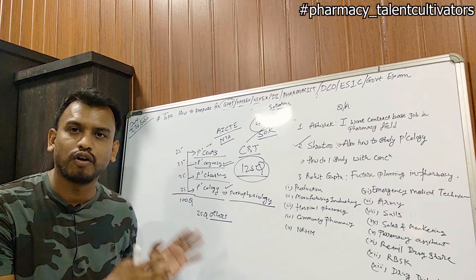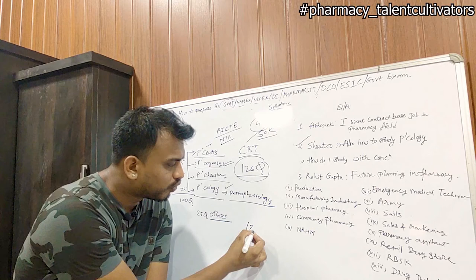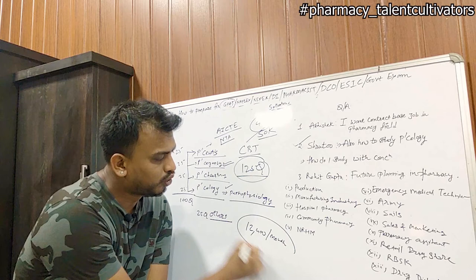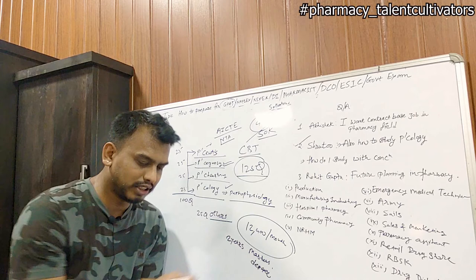When you qualify the GPAT exam, MHRD gives you a stipend of 12,400 rupees per month to complete your two-year Master's degree course. This is a very renowned exam in the pharmacy profession for pharmacy professionals.